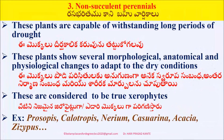The third category is non-succulent perennials. These plants are capable of withstanding long periods of drought. This plant shows several morphological, anatomical, and physiological changes to adapt to dry conditions. These are considered to be true xerophytes. Examples are Prosopis juliflora, Calotropis gigantea, Nerium, Casuarina, and Acacia.